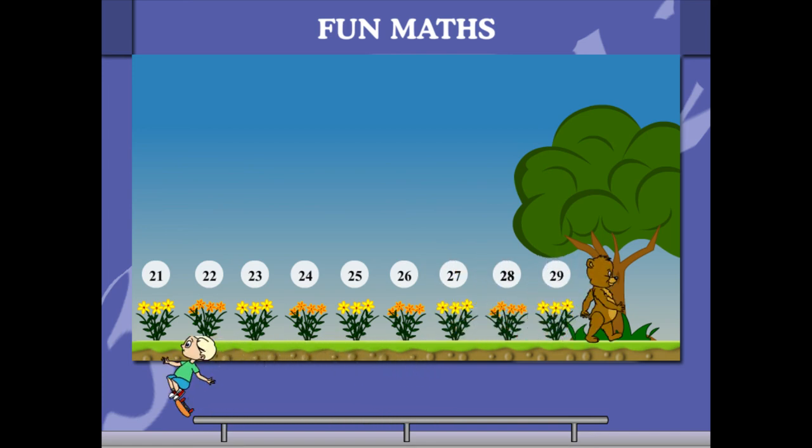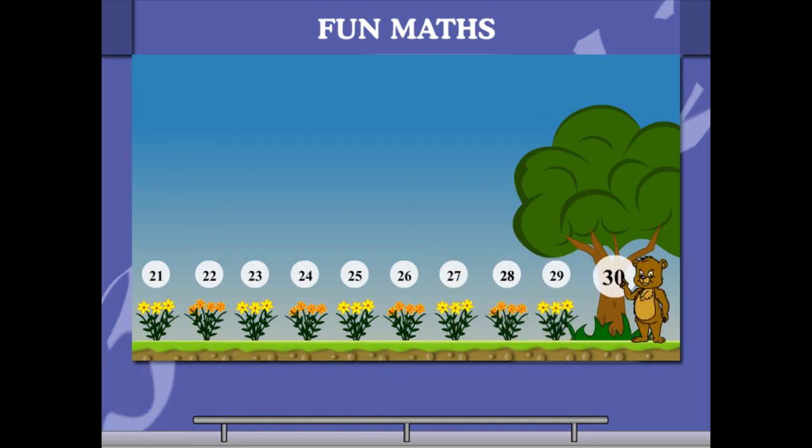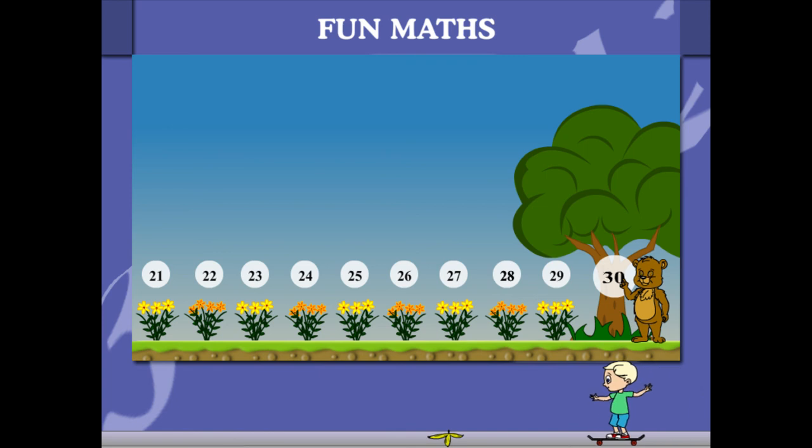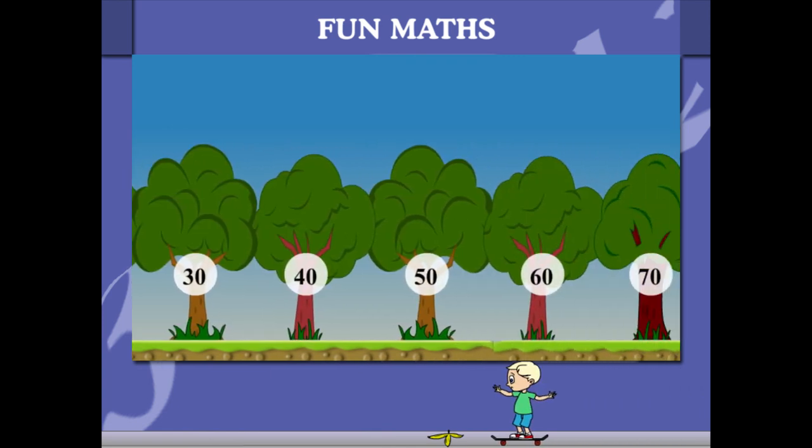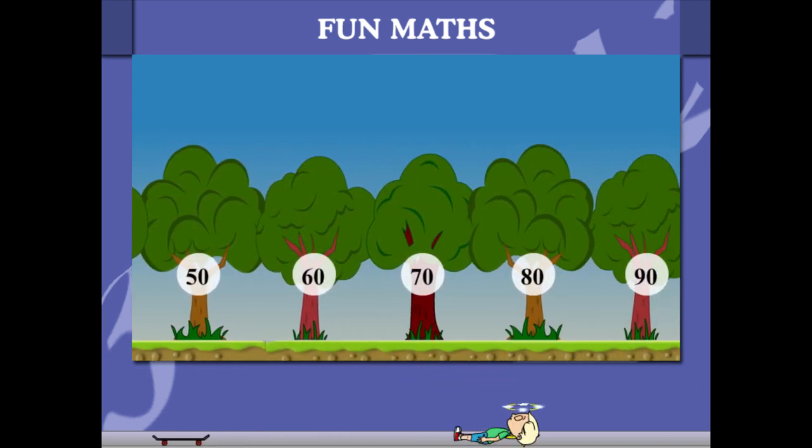You can now group the trees as 10, 20, 30, 40, 50, 60, 70, 80 and 90.